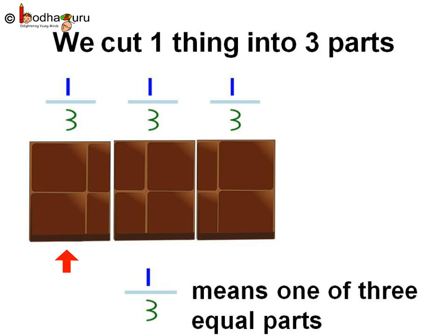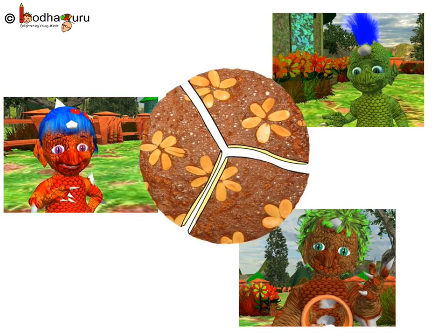See — one part, two parts, three parts. So one third is one of the three parts. Same way, if the cake was also cut into three equal parts, then Motu as well as the twins Chinu and Minu could have shared equally.